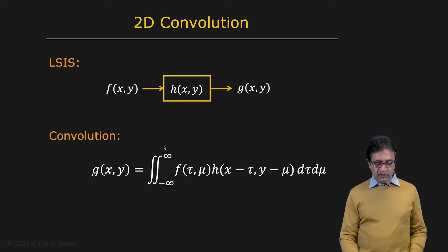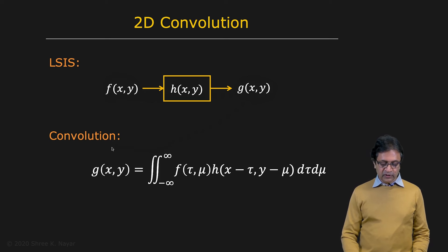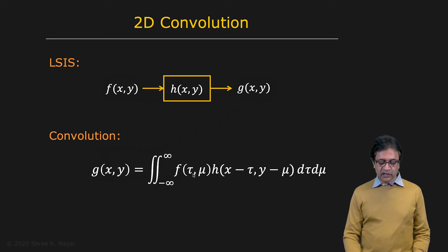So the two-dimensional convolution is defined as follows: g of xy equals the double integral of f of tau mu times H of x minus tau, y minus mu, d tau d mu.